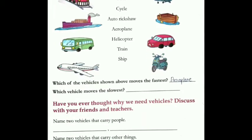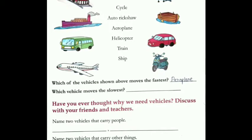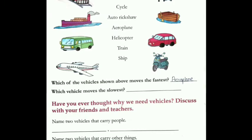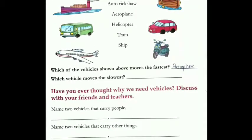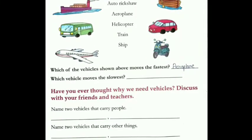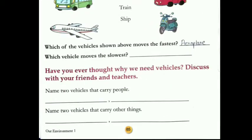Which of these vehicles shown above moves the fastest? Yani ke is aeroplane jo hota hai — in sab se zyada fast hota hai. Which vehicle moves the slowest? Yani ki sabse dheere kaun si vehicle chalti hai — ye aapko batana hai.